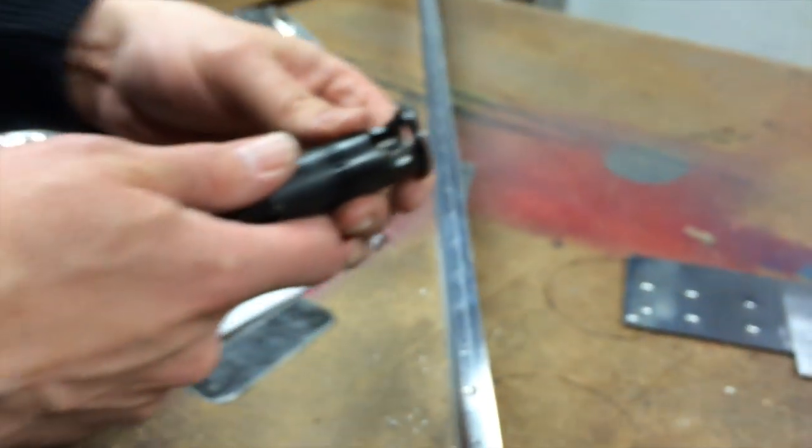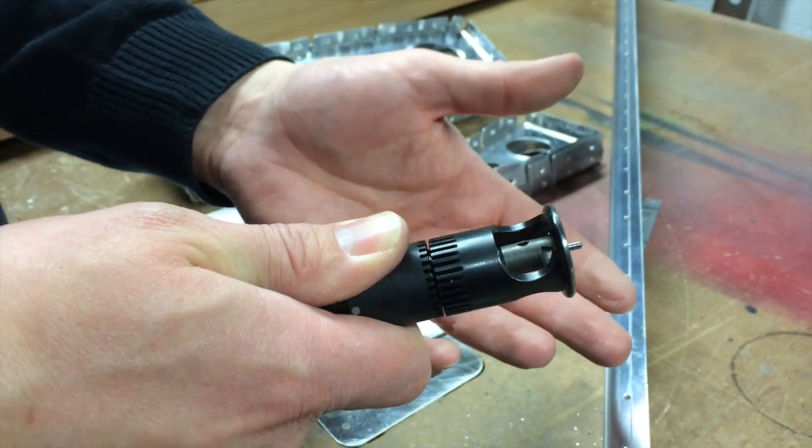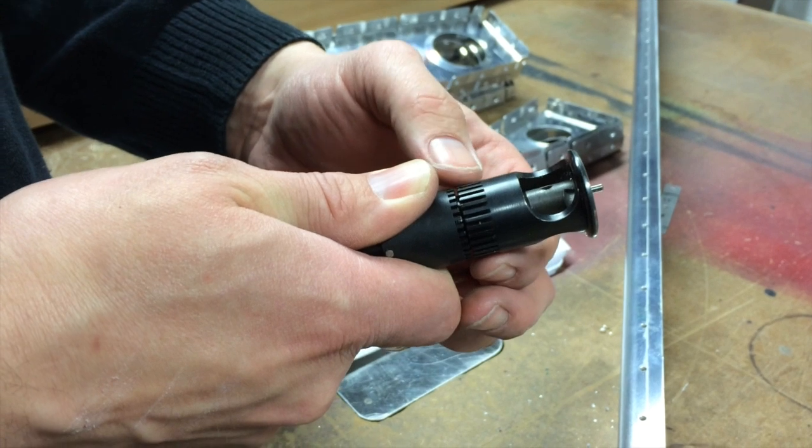And this is the reason that it's nice to have more than one countersink, so once you have the number 40 set up, you can leave it set up since that's what you normally use.